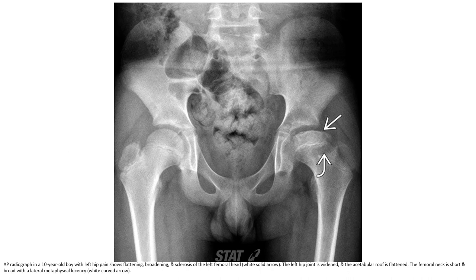Let's see the first case. This is the case of a ten-year-old boy with left hip pain. On radiograph: flattening, bordering, and sclerosis of the left femoral head. The left joint space is preserved. The acetabular roof is flattened. The femoral neck is short and broad with lateral metaphyseal lucency.